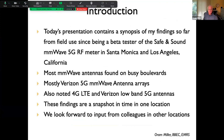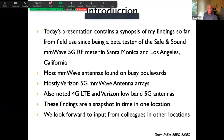Today's presentation will contain a synopsis of what I've shown in the first two learning sessions. I've been a beta tester since early June. In summary, most millimeter wave antennas I've found are on busy boulevards, mostly from Verizon but not always — I'll show a non-Verizon one today. I've also noted 4G LTE and Verizon low band antennas. These findings are a snapshot in time in one location, and we look forward to input from colleagues.